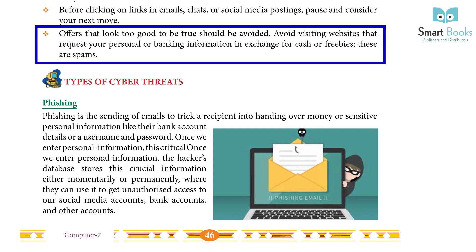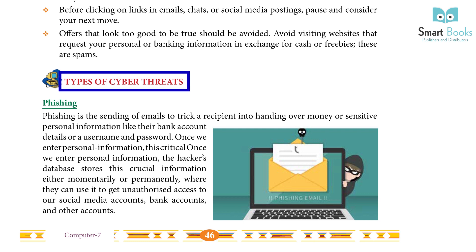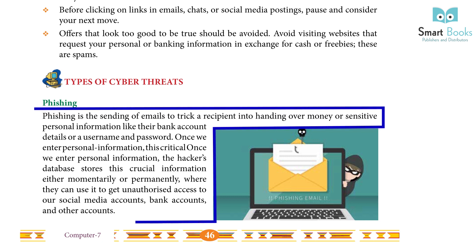Types of Cyber Threats — Phishing: Phishing is the sending of emails to trick a recipient into handing over money or sensitive personal information like their bank account details or a username and password. Once we enter personal information, hackers' databases store the crucial information either momentarily or permanently, where they can use it to get unauthorized access to our social media accounts, bank accounts, and other accounts.